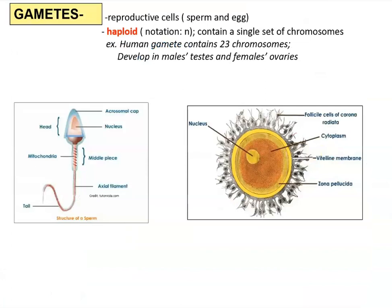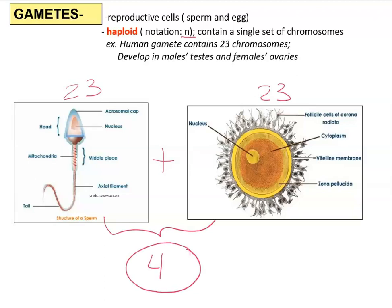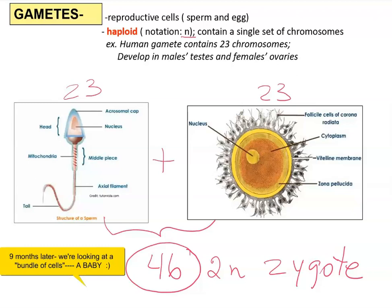Another type of cells would be reproductive cells — this is what we get as a result of meiosis. We have sperm and egg, and these cells are haploid, notated as little n, and they only have a single set of chromosomes. In humans, sperm carries 23 chromosomes and the egg carries 23 chromosomes. Those two fuse during fertilization and restore the number to 46, making a diploid cell called a zygote, which is ready to divide by mitosis and produce more cells — that's how an organism grows.